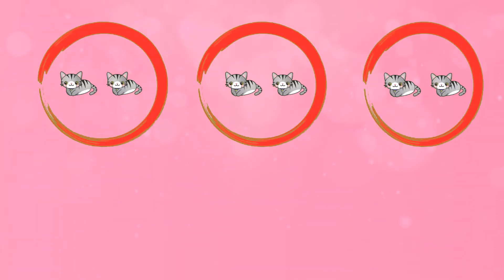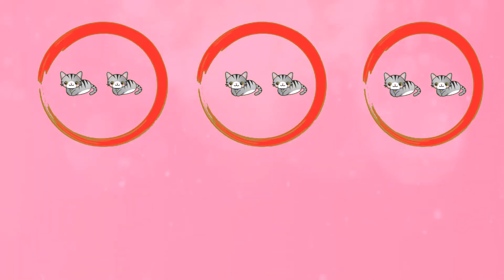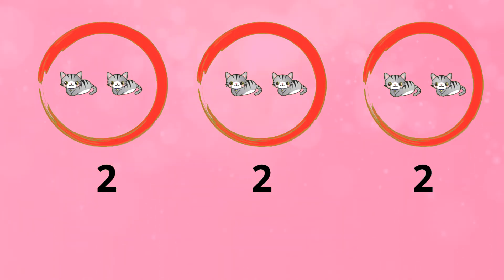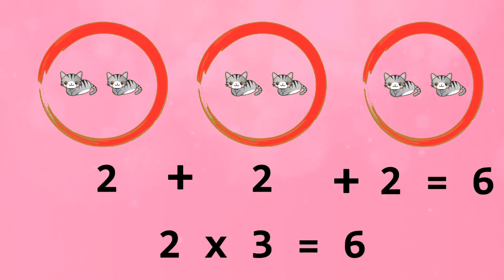How many groups? There are three groups. How many in each group? There are two in each group. How many all together? There are six all together.